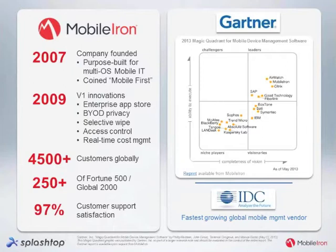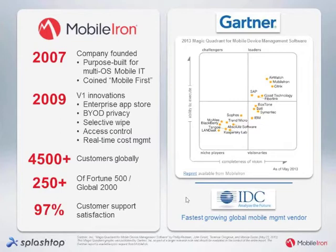That first version was really founded around the principles of BYOD — bring your own device to the workplace. At that time, we were primarily working on BlackBerry devices, but you can see where we've shifted in that short amount of time to primarily iOS and Android today. We now have close to 5,000 customers, about 250 of the global 2,000, and a 97% customer satisfaction rate. Almost more than half of our revenue comes from repeat orders, which really shows that customers believe in our product. We've also always been in the Gartner Magic Quadrant leader quadrant since Gartner started that publication.